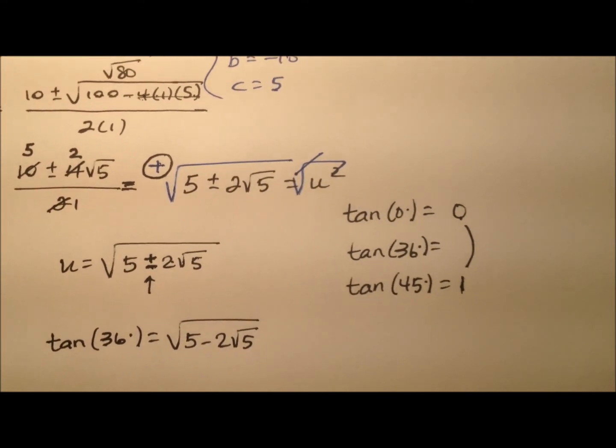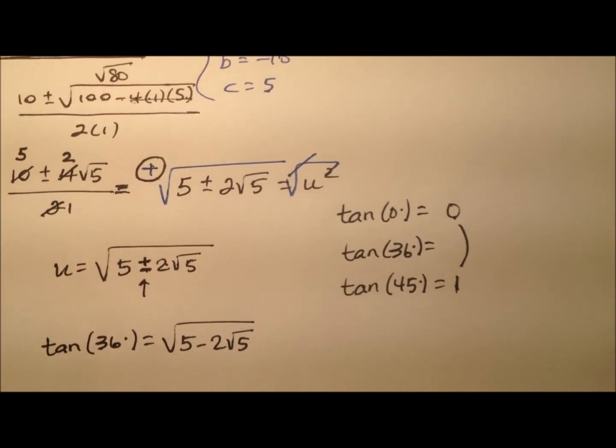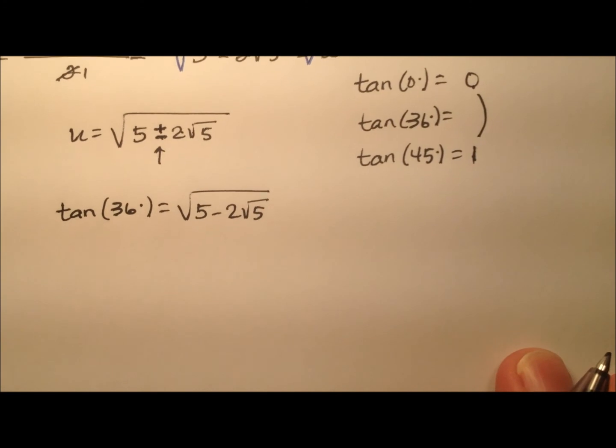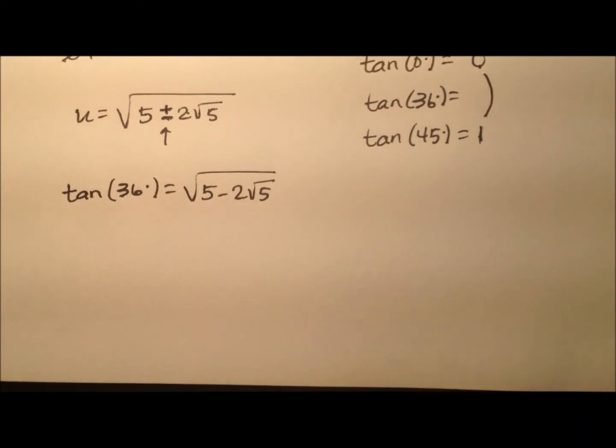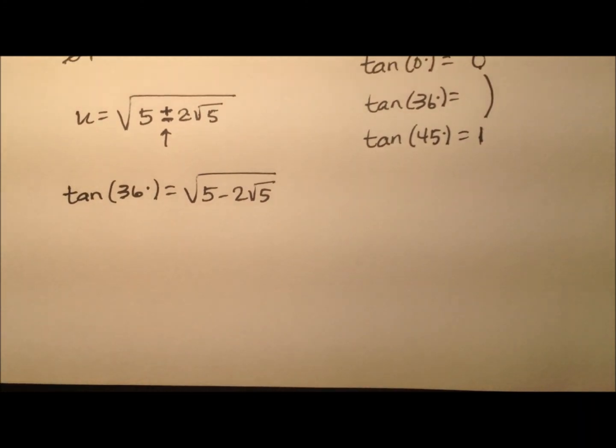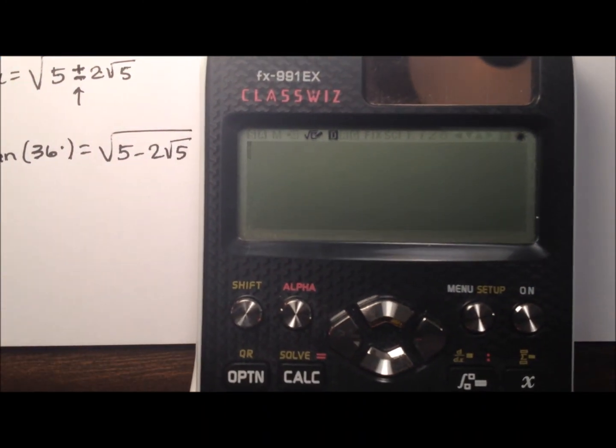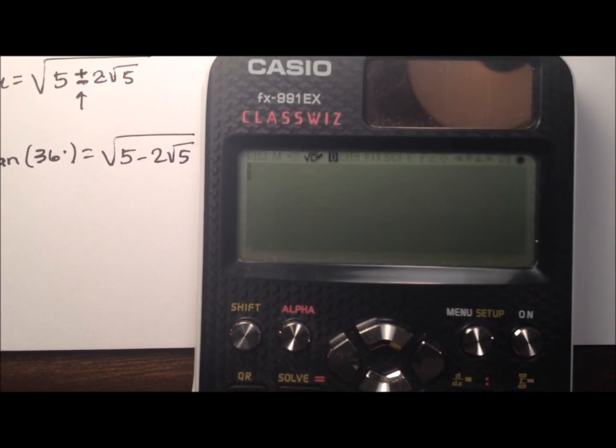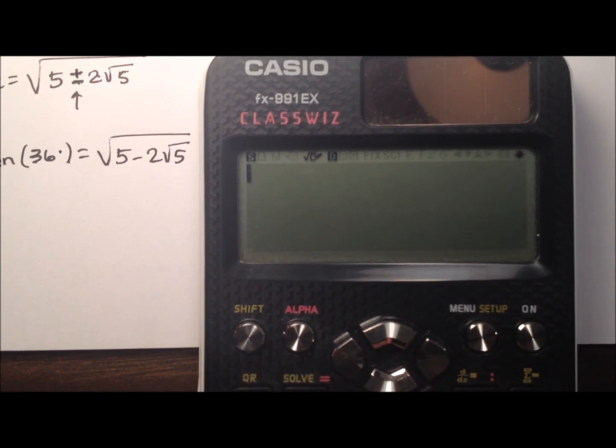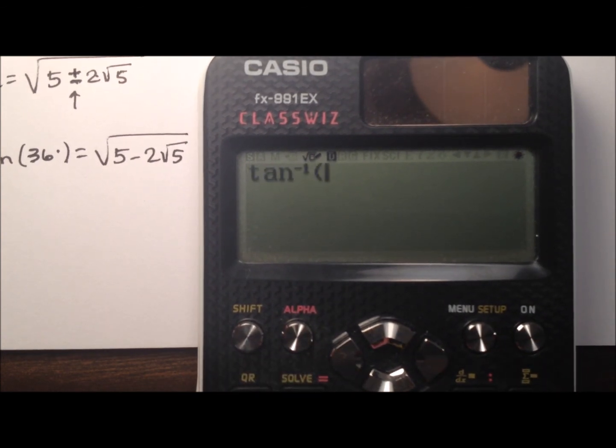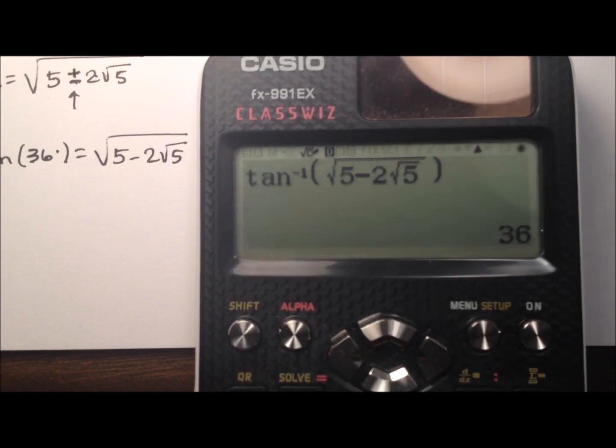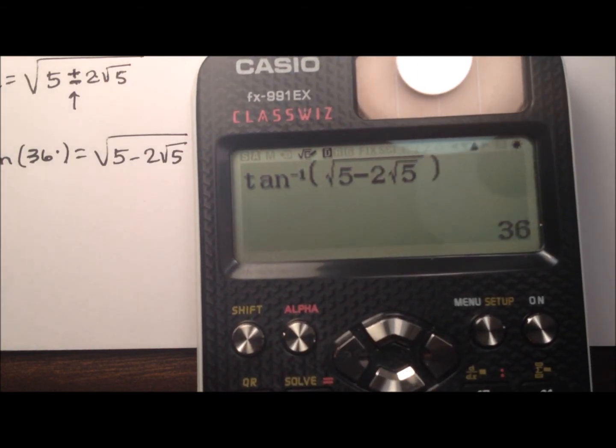And before I get too far, let's grab a calculator. And I want to show you that that works out. And then I want to show you one final thing that we can do with this. Okay, so here's my calculator here. And so let's do the inverse tangent. And we'll put this ratio in. So it's the square root of 5 minus 2 radical 5. We'll jump out of there, close it up. And hey, yeah, 36 degrees. That's very good.